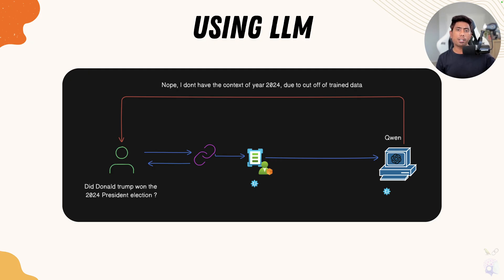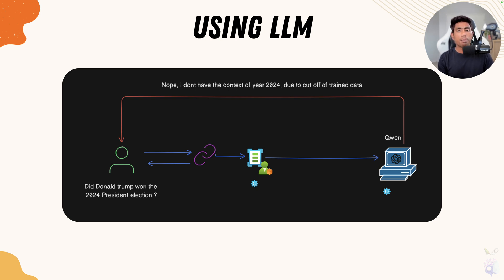Remember, back in 2022 when large language models were released with ChatGPT, they didn't really respond to current trends — there was a cutoff until 2021 or so. They always responded with the same answer if you tried to ask a recent question. But fast-forward to 2025, and you'll see that all these large language models answer so immediately because they are now enabled with tool calling features.